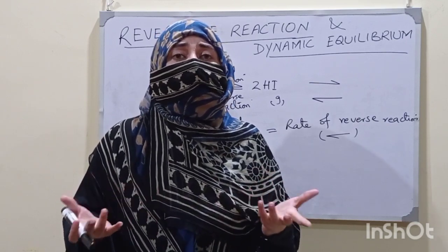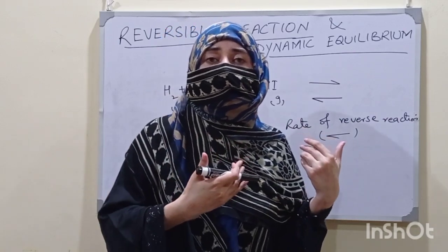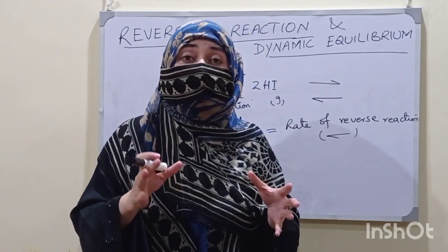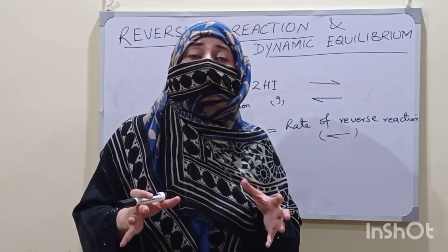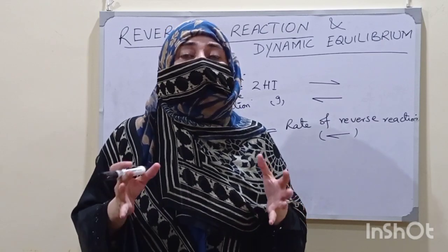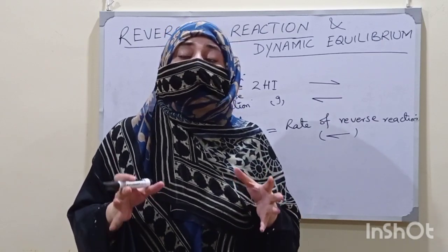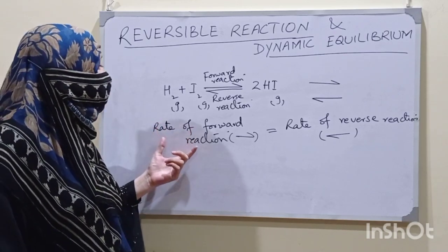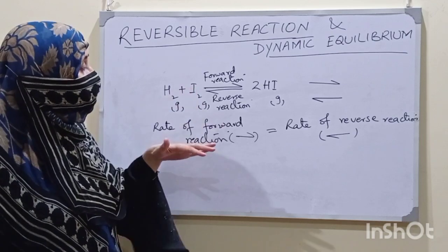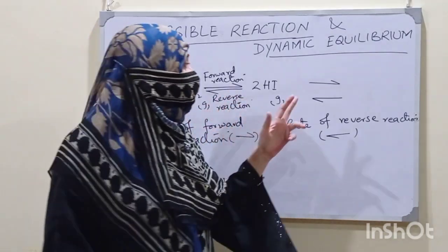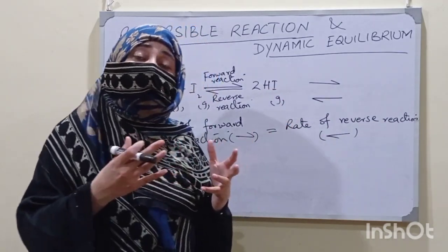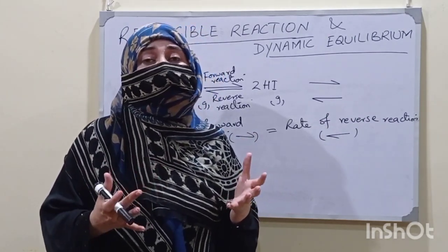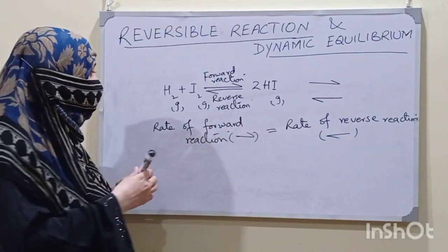The net result is no change in position. The same is the case with the reaction — there is a certain time when the rate of forward reaction becomes equal to the rate of reverse reaction. The reaction is occurring and not being stopped, but the net result is that the concentration of the reactants and products remains the same. Either substance is present in the reaction mixture in its specific concentration. This condition is called equilibrium.